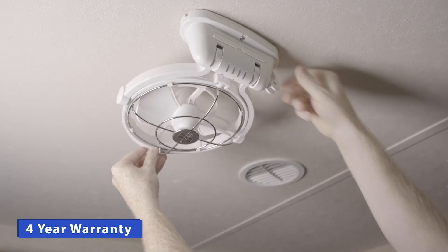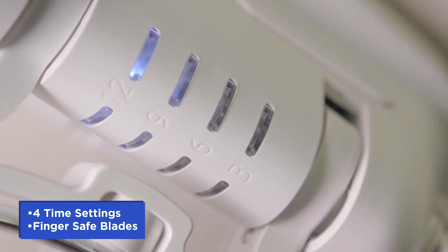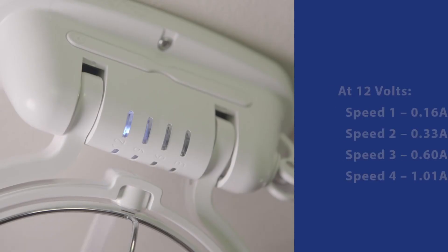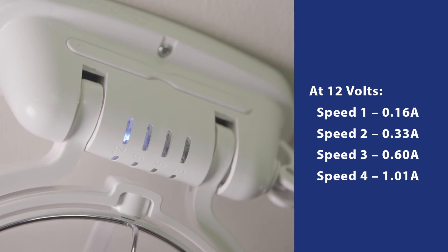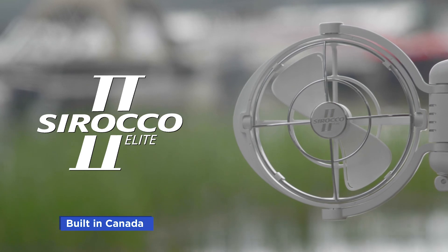Push it flat against the surface when not in use. Now that your fan is installed, you will want to check out the four timer settings: 3, 6, 9, or 12 hours, as well as the four speed settings. You are now ready to enjoy your Sirocco II Elite Cabin Fan.